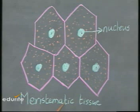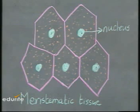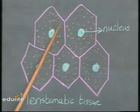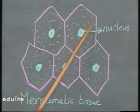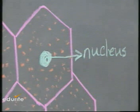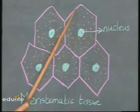The meristematic tissue is made up of cells which are so energetic and youthful that they divide continuously. Have a look at these cells. They are polygonal, rectangular or oval in shape. Each of these cells has a distinct nucleus and a thin cell wall.